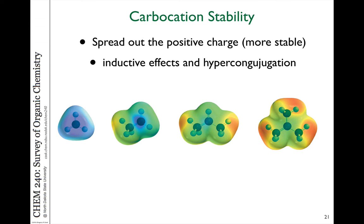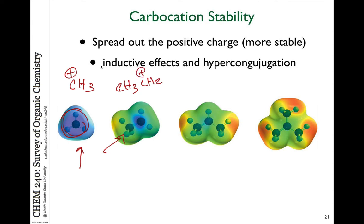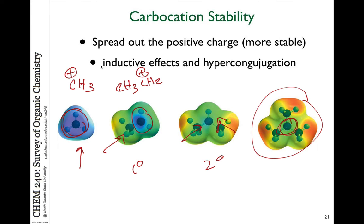The adjacent bonds donate some electron density to the plus charge, helping to neutralize it — we can see that neutralization as the charge spreads out. Looking at electrostatic maps of these carbocations: the CH3 carbocation is most electropositive, showing large purple-blue color, very positively charged. Adding even a single methyl group — the primary carbocation — greatly diminishes that blue color. Two alkyl groups in the secondary carbocation is even better, and the tertiary carbocation shows hardly any blue on the electrostatic map. That's why the tertiary carbocation is the most stable.